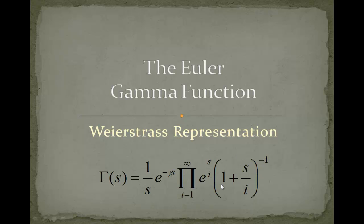The minus 1 just denotes that this belongs into the denominator. Our counting variable i equals 1 starts at 1 and goes to infinity.